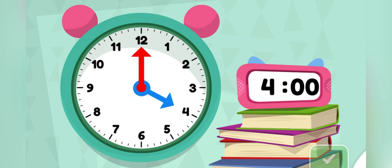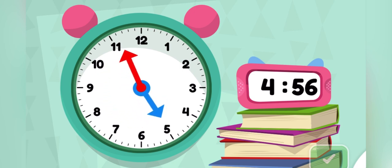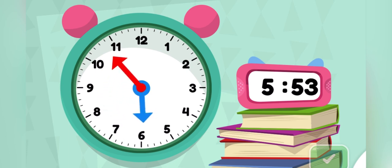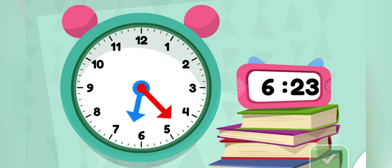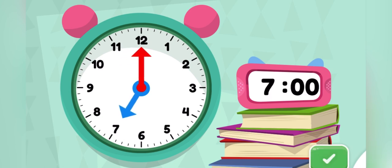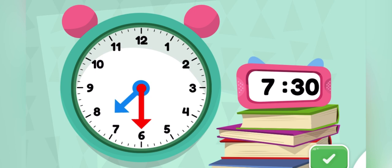Move the minute hand on the round clock to show 7.30. Good thinking! You made the clock show 7.30.